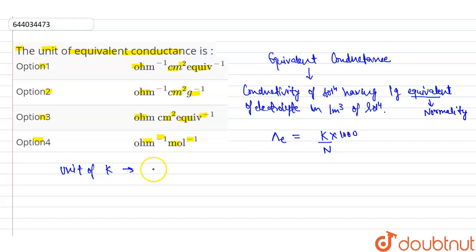It is nothing but the reciprocal of resistivity. So the unit of conductivity is per ohm per centimeter. And we know about the unit of equivalent mass.